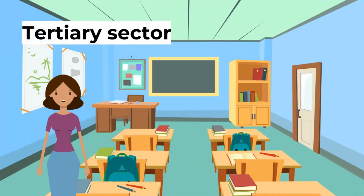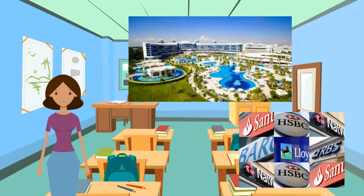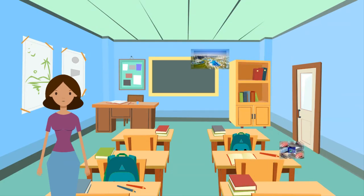Finally, the tertiary sector. This consists of all the services provided in an economy. This includes hotels, travel agencies, hair salons and banks. Up until the mid-18th century, the primary sector was the largest in the world, as agriculture was the main profession.